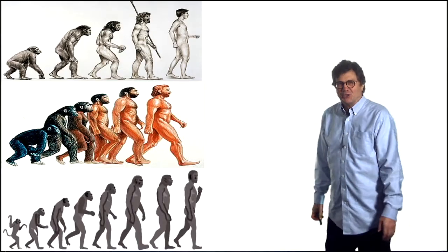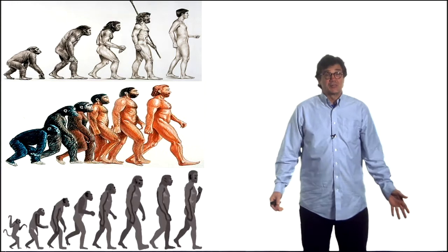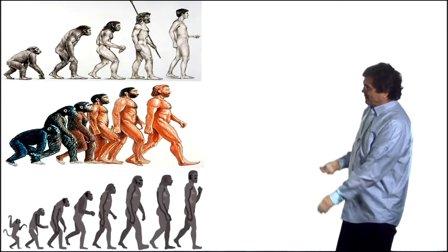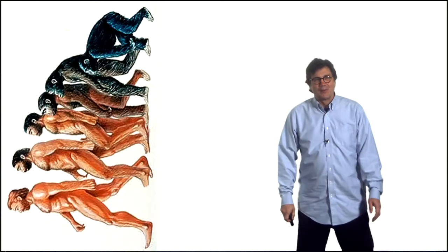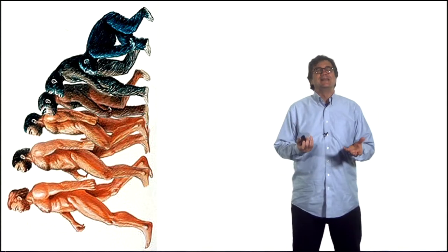If you Google this image you will see many versions of it and one of the things that's wrong with it is there are always men and they're always marching to the right. Why can't they march to the left? Why can't they march up or why can't they march down? And there are other misleading things about evolution.